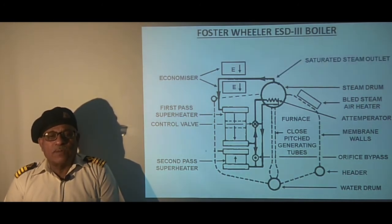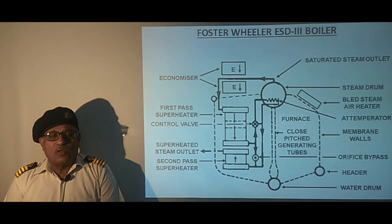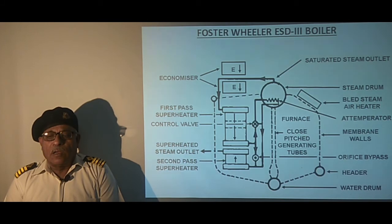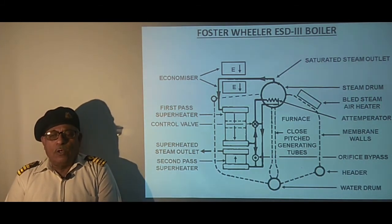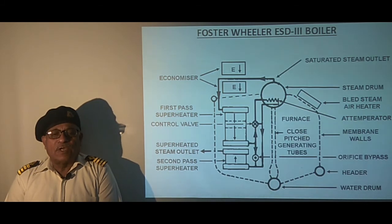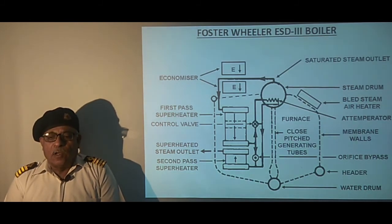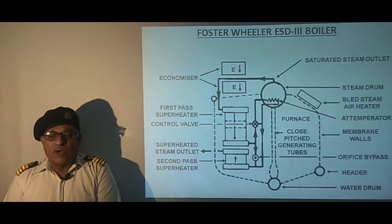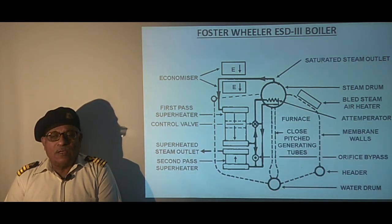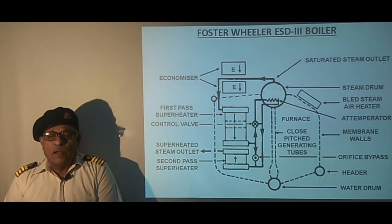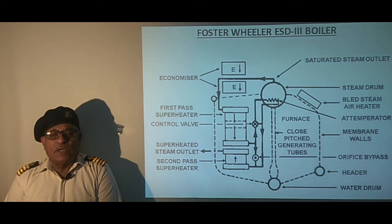We have a saturated steam outlet from the boiler and superheated steam outlet comes out from the secondary pass superheater and goes to the turbine. The furnace is completely water cooled and tall enough to provide a long flame path for roof fired burners. Superheaters are placed in the athwartship direction which results in shorter element length and makes them easy to support. This boiler uses bled steam for heating of the combustion air.